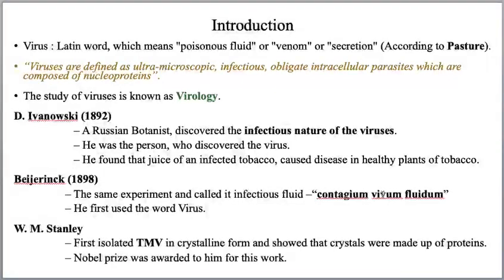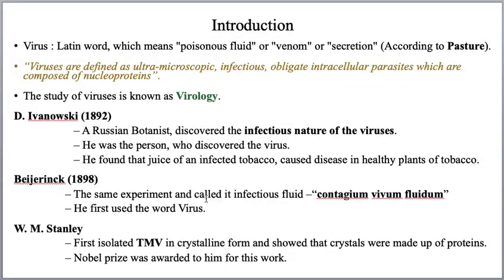Beijerinck called this virus 'contagium vivum fluidum.' The meaning of contagium vivum fluidum is that a virus causes disease from one plant to another healthy plant with the help of body fluids — it is called an infectious fluid. It enters from one infected body to another and spreads with the help of protoplasm present in the cell. Beijerinck is the one who used the word 'virus.'